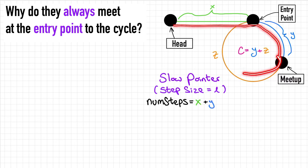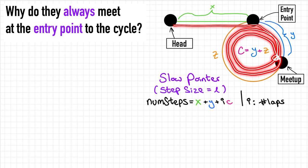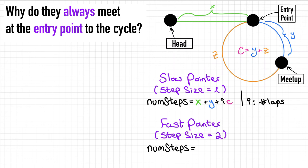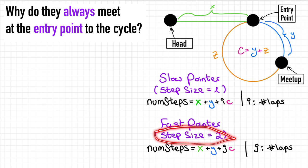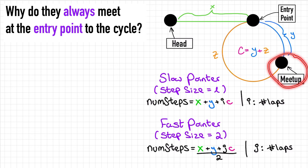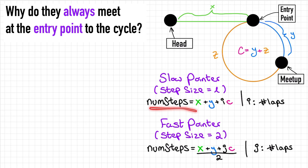Similarly, the number of steps the fast pointer made before meeting the slow pointer is x plus y plus j full laps. Because the fast pointer moves two positions per step, we divide its total distance by two. We know the two pointers met at this point, meaning they arrived at the same iteration after the same number of steps. So the number of steps the slow pointer made is equal to the number of steps the fast pointer made — that gives us our equation.